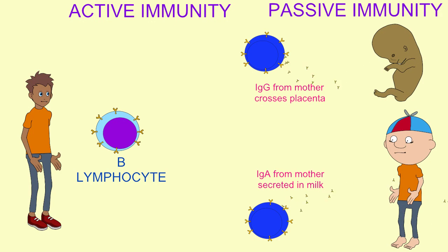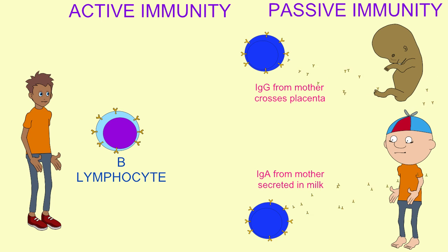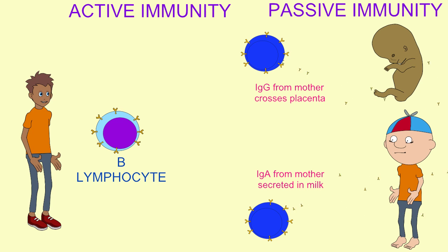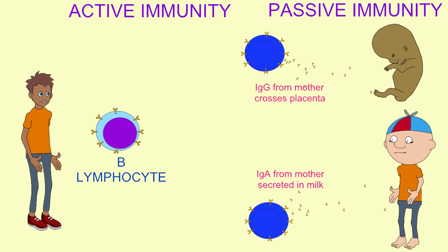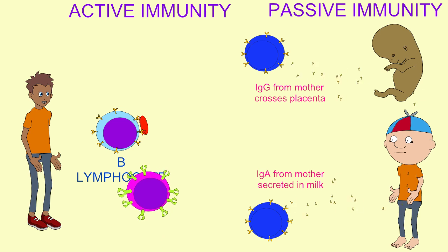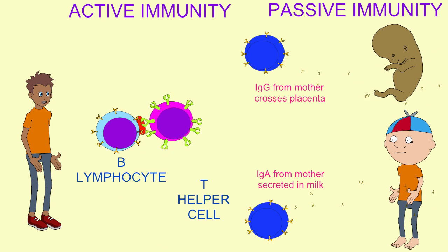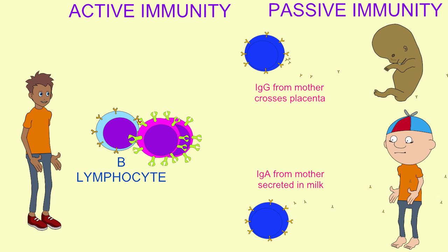IgG antibodies can cross the placenta, and so the antibodies produced by a mother's body can be passed on to the fetus, bind antigens there, and initiate immune responses. IgA antibodies can be passed through milk to the infant.